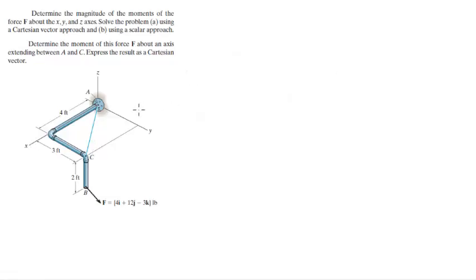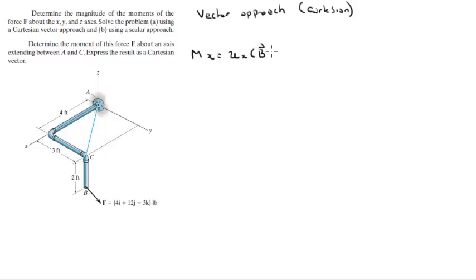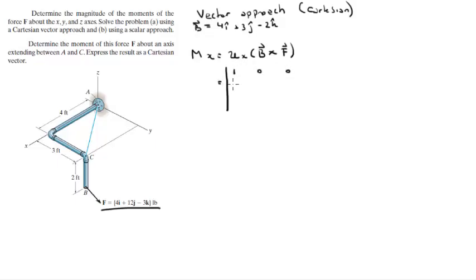Now let's do the Cartesian vector approach. The moment about x is the unit vector in x times (B cross F). We build a 3x3 matrix: the first row is the unit vector in x, which is [1, 0, 0]; the second row is B = [4, 3, -2]; and the third row is F = [4, 12, -3]. Then redraw the first and second columns for the diagonal method.